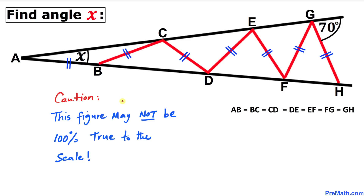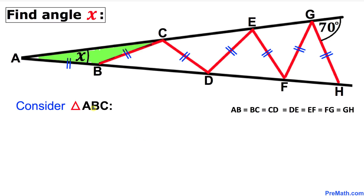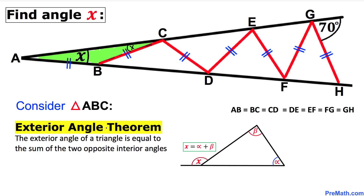This figure may not be 100% true to scale. Let's focus on triangle ABC — it is an isosceles triangle since AB equals BC. If this angle is X, this angle has got to be X as well. Recalling the exterior angle theorem: the exterior angle of a triangle equals the sum of the two opposite interior angles. So angle B is our exterior angle and equals X plus X, making it 2X.